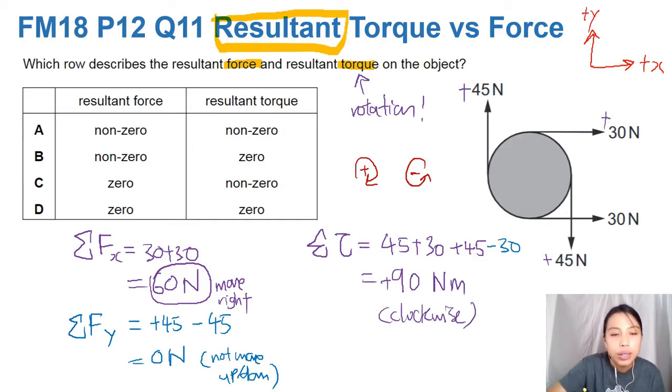So that means your net torque is not zero. Let's look at the answers. So we look at resultant force. It's not zero, because you're going to move to the right. So this is out. Then your torque is also not zero. Not zero. So then you have non-zero, non-zero, which means you will have a resultant force. The object is going to move, and your object is going to rotate at the same time. So it's rotating and moving.